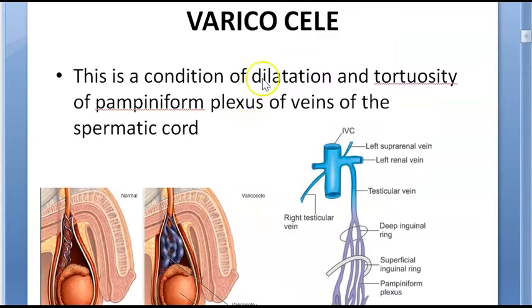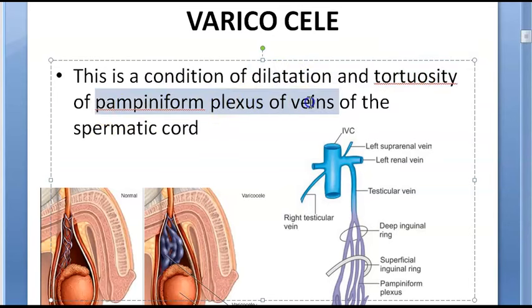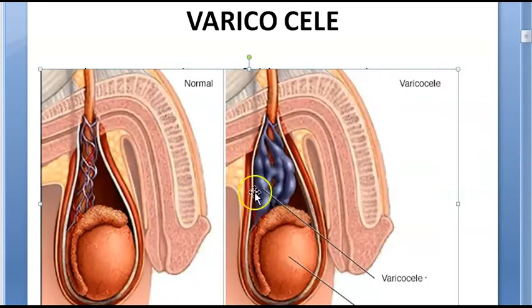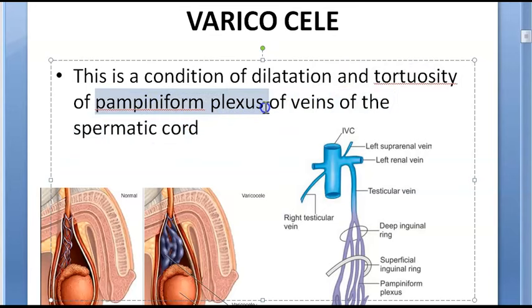What is varicocele? It is a condition of the dilatation and tortuosity of the pampiniform plexus of veins of the spermatic cord. So what is dilated? The pampiniform plexus of veins of the spermatic cord.